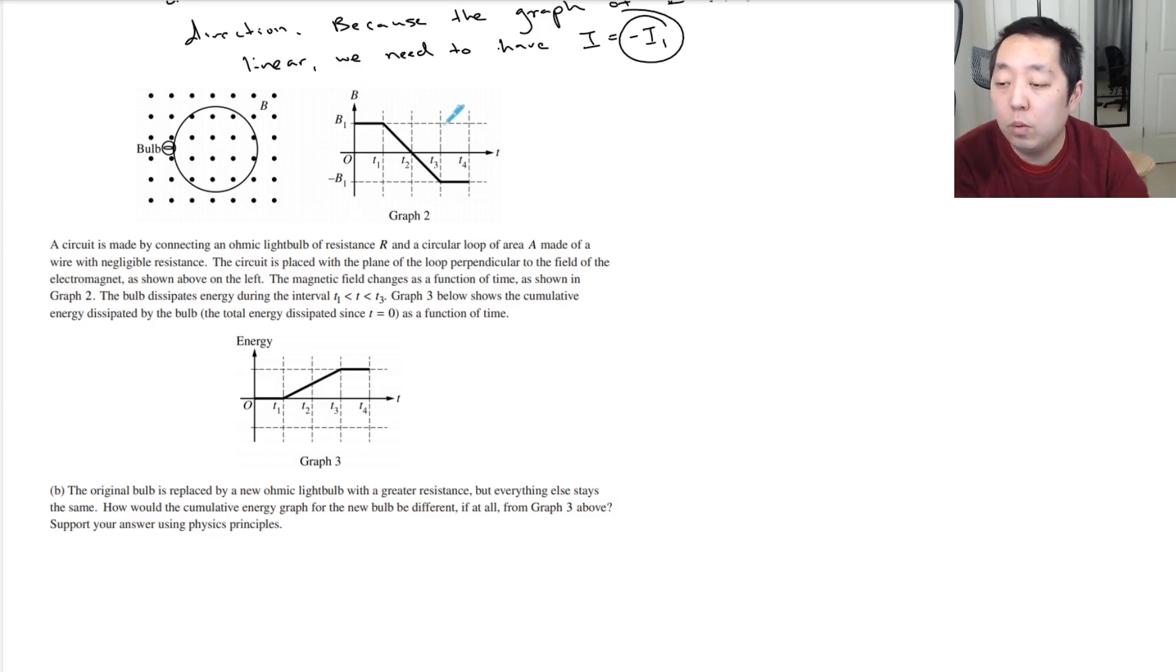In terms of a circuit, power equals voltage times current. The voltage is equal to the change in the flux per time, and this part is staying the same because we're keeping the same flux through the loop. We're not changing the size of the loop, just the light bulb. So the area is staying the same and the magnetic field change is the same, so the voltage stays the same.